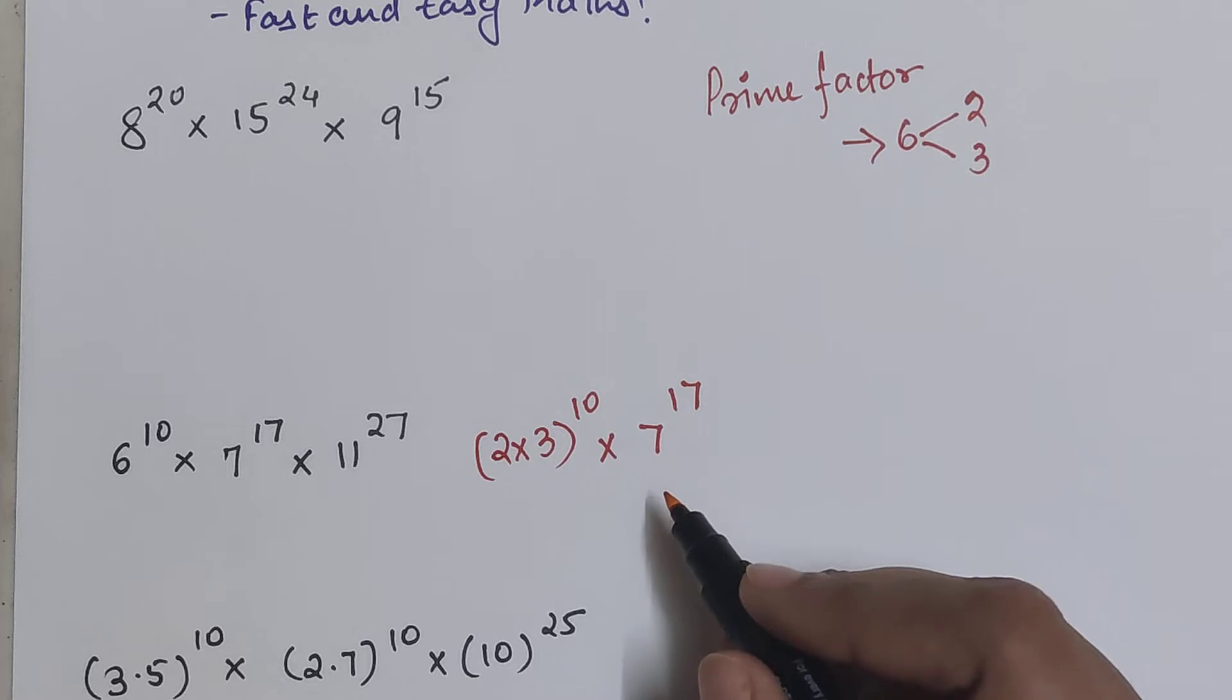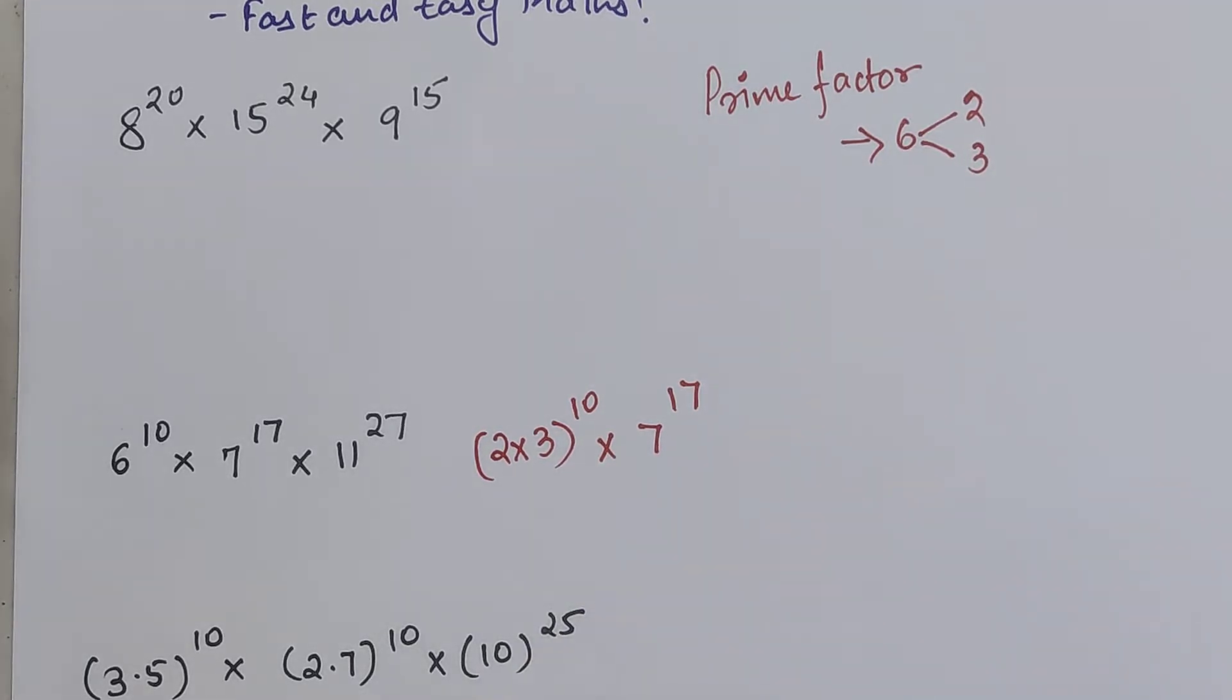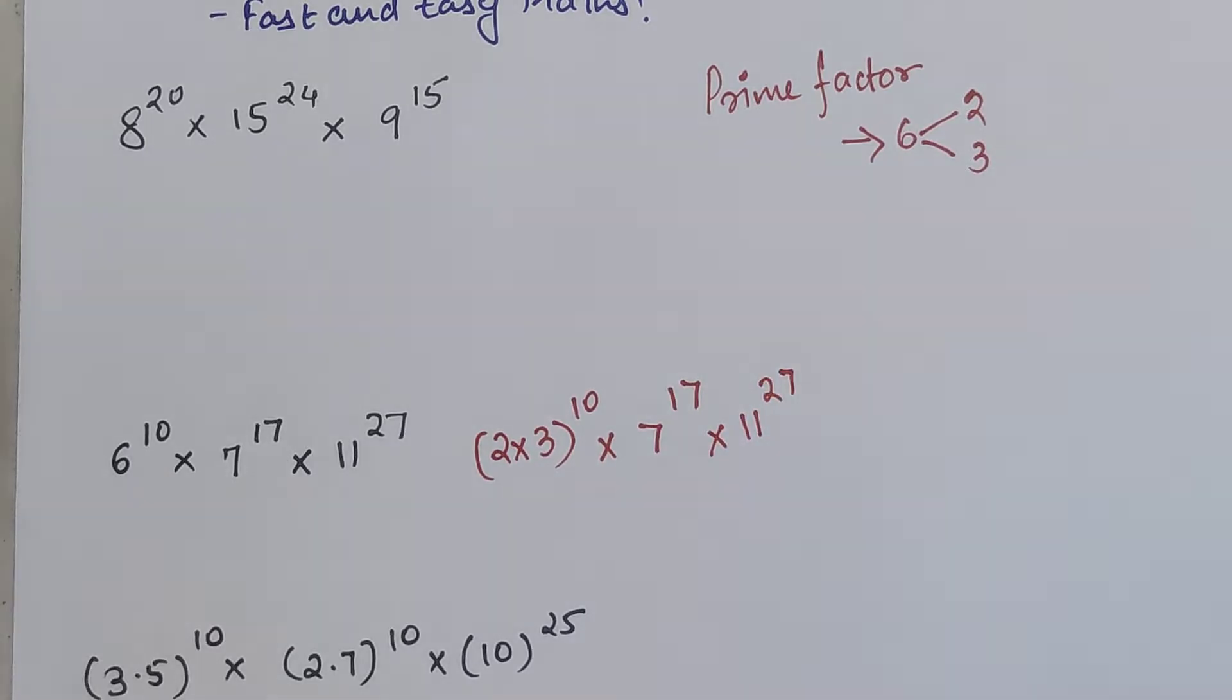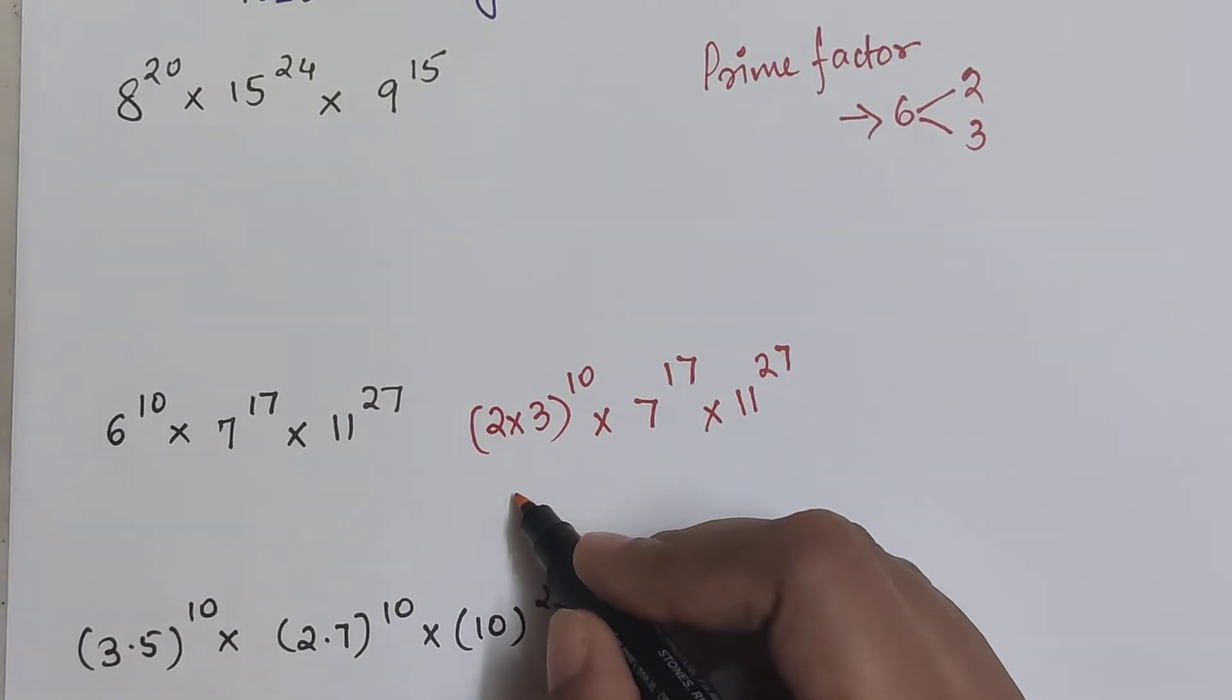Why have I written that? Because I can't break 7 further because 7 itself is a prime number. Similarly, 11 also can't be broken further because 11 itself is a prime number.